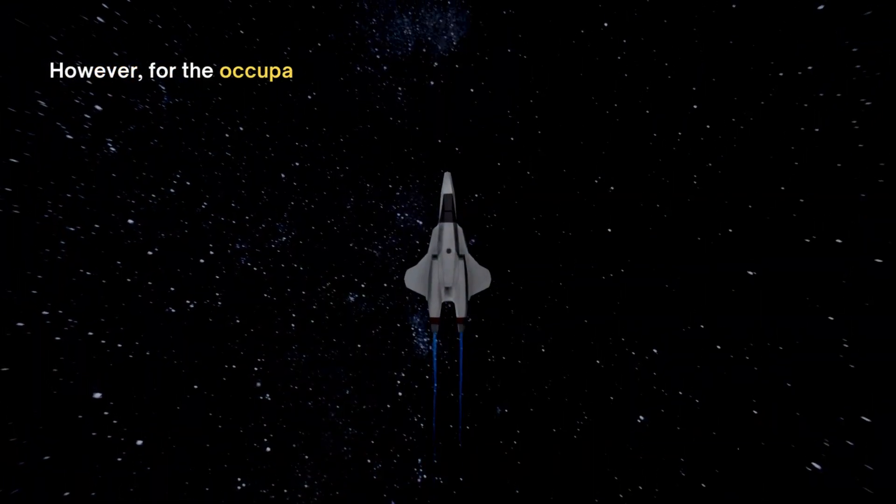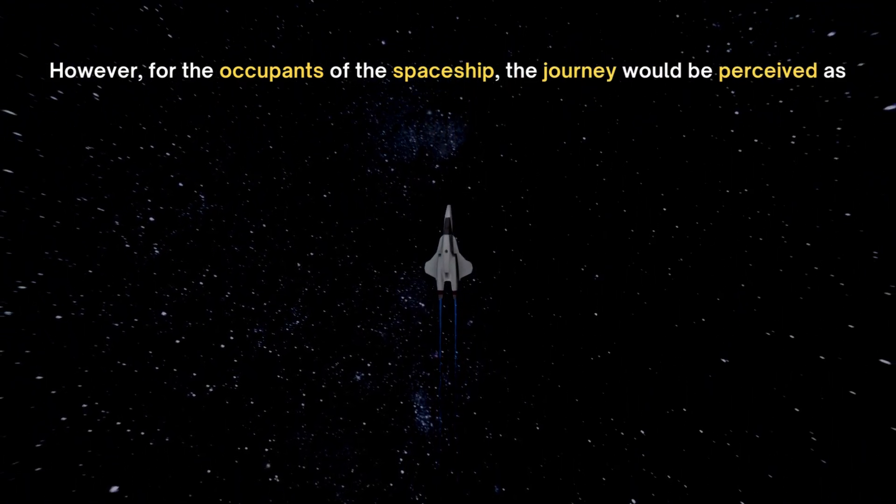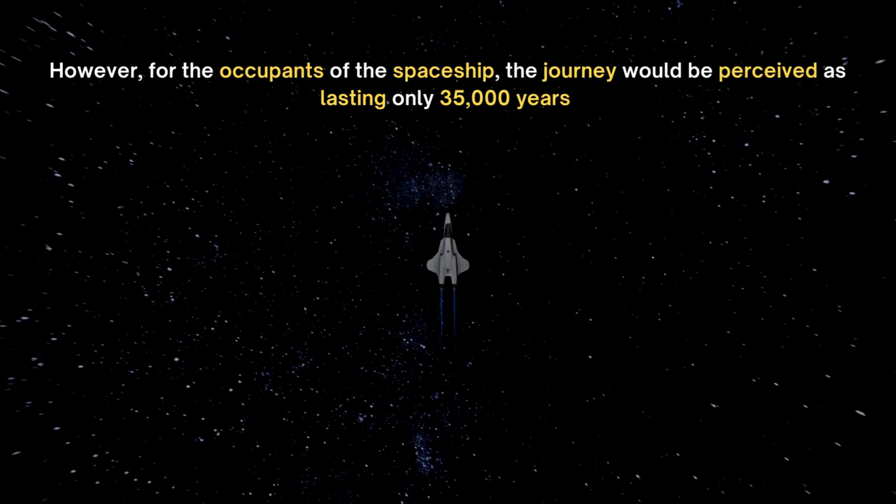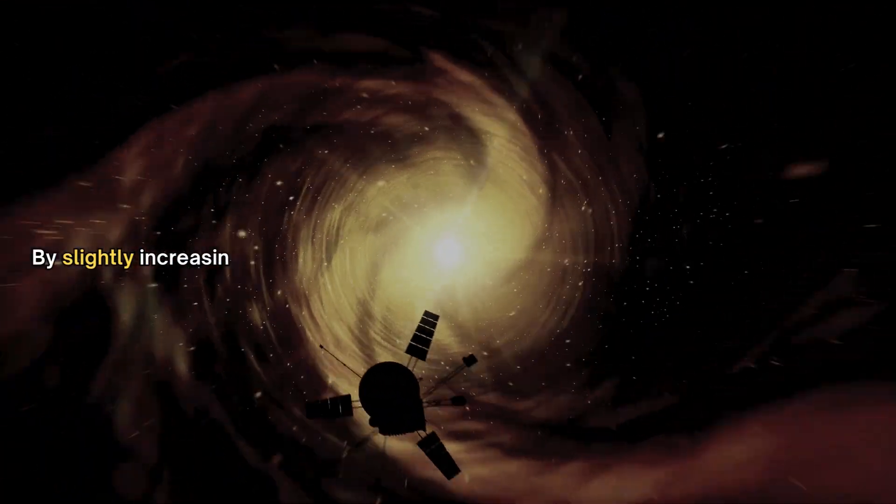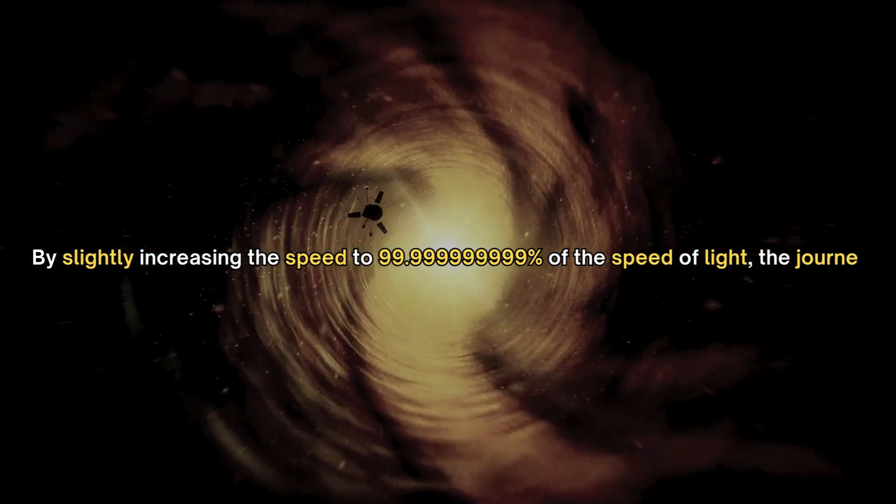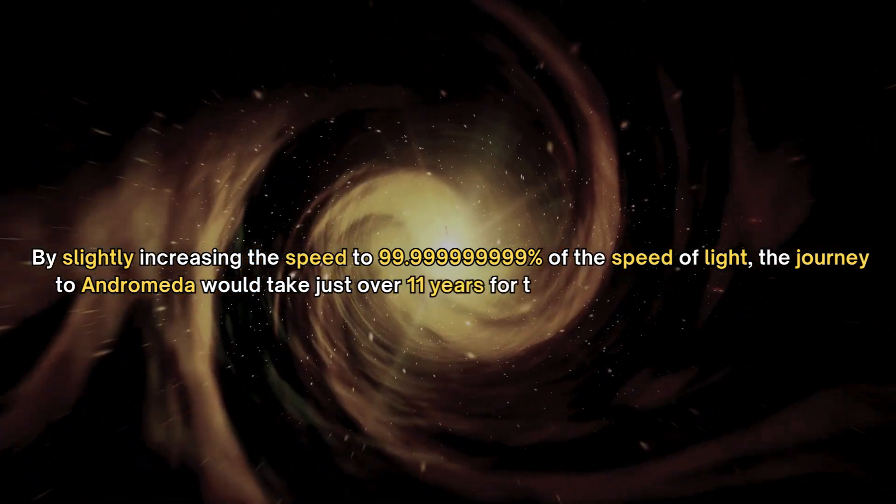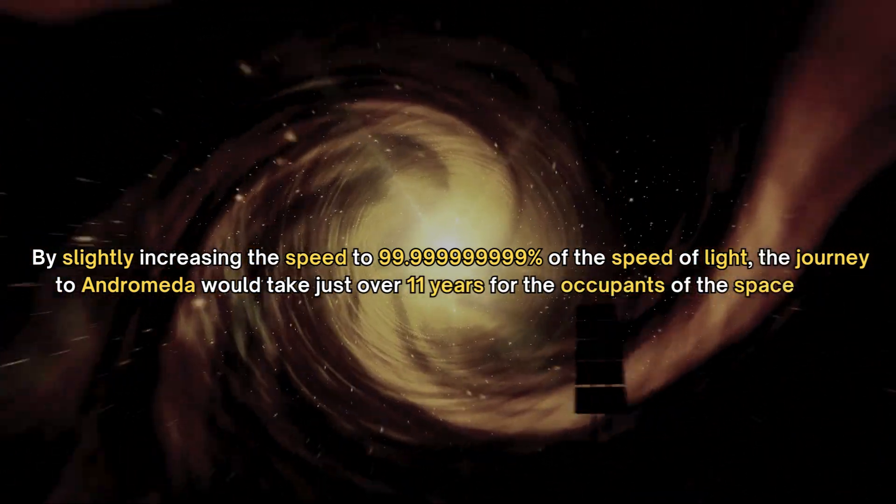However, for the occupants of the spaceship, the journey would be perceived as lasting only 35,000 years. By slightly increasing the speed to 99.999999999% of the speed of light, the journey to Andromeda would take just over 11 years for the occupants of the spaceship.